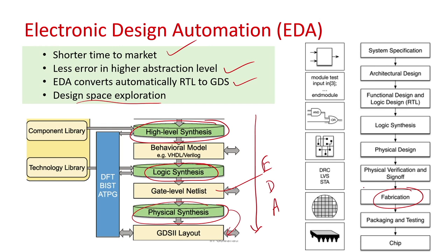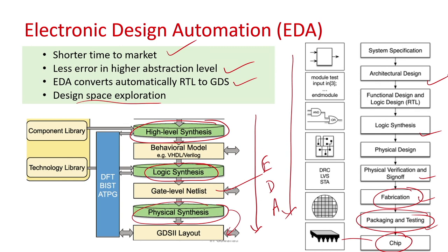This is what electronic design automation is, and without it you would not be able to get your actual IC. Once you get the layout, you do fabrication — physically fabricating your IC — and get a physical chip. After that you do packaging and test to check for any manufacturing defects, then you get the IC and sell it. This is the overall EDA flow: high level synthesis, then logic synthesis, then physical synthesis, fabrication, packaging, and test to get the IC. I will now go through each step at a high level and explain what is happening behind the scenes.